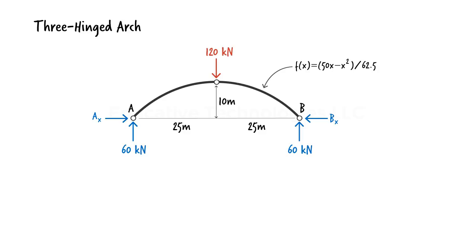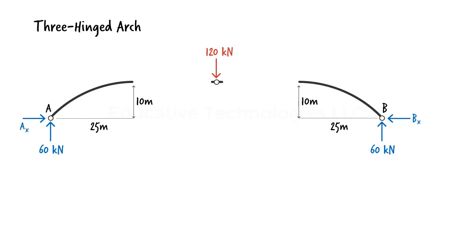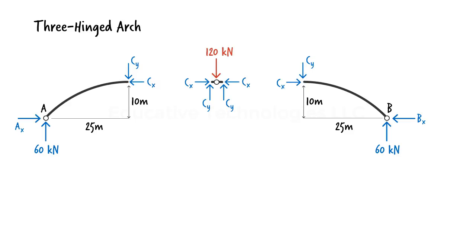To determine the horizontal reactions, let's separate the left and the right halves of the arch like this. Since bending moment at a hinge is 0, we end up with only two unknown forces at each cut point. Further, due to symmetry, we have identical forces at the right and left cuts.